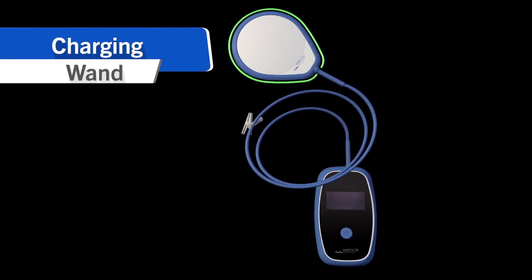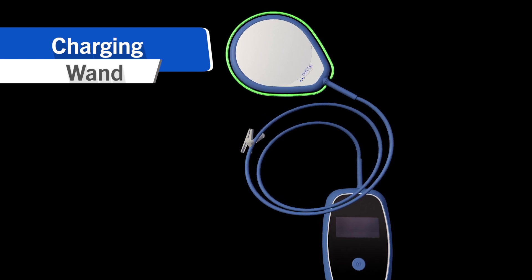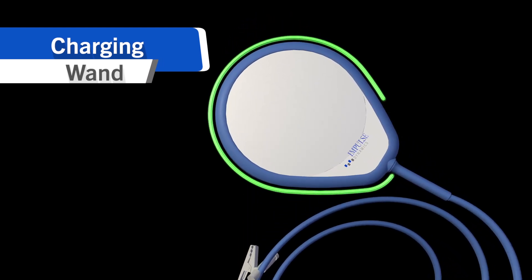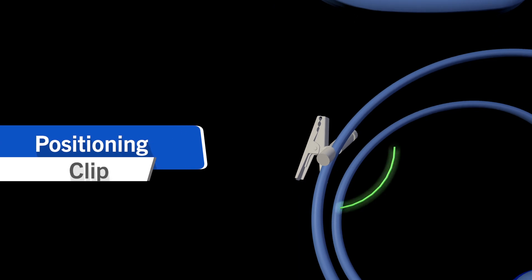Charging wand: the blue and white paddle that is placed over your device to charge. Positioning clip: the white clip that attaches to your clothing to secure the charging wand in place.